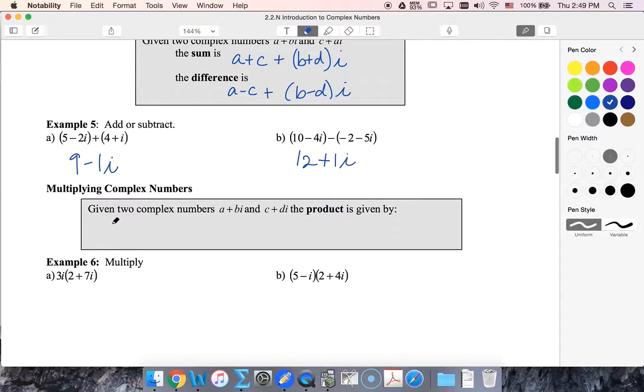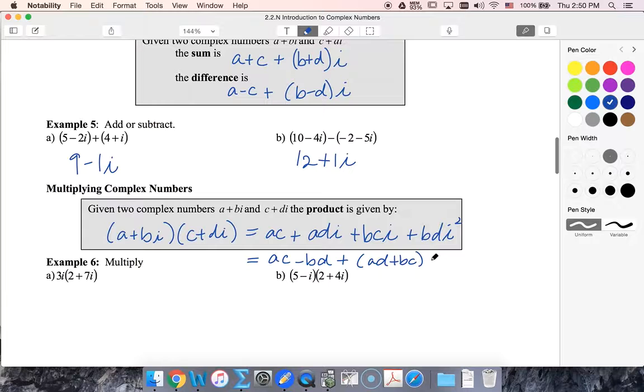I'm gonna use distribution to multiply out, so I'll end up with ac plus adi plus bci plus bdi squared. Of course, i squared is negative one, so I can rearrange this to collect my real terms: ac minus bd, plus ad plus bc times i make my imaginary terms.